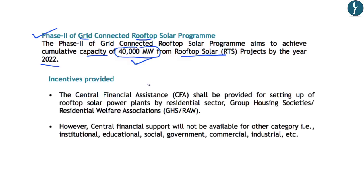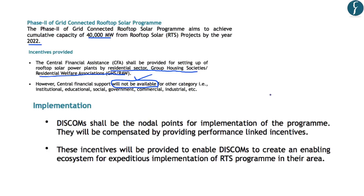Under this scheme, central financial assistance will be provided for setting up rooftop solar plants by the residential sector, group housing societies, or resident welfare associations. Beneficiaries and non-beneficiaries are important from the preliminary examination point of view. The central financial assistance will not be available for institutional, educational, social, governmental, and commercial institutions — it is available only for the residential sector or group housing societies. Electricity distribution companies will be the nodal points for implementation.